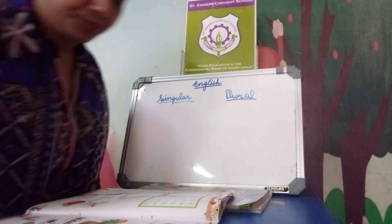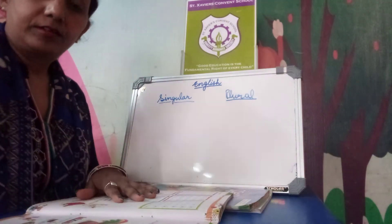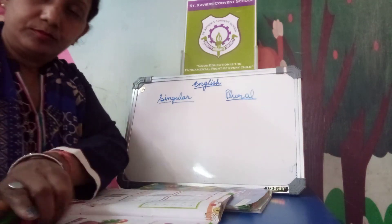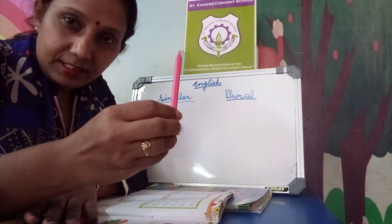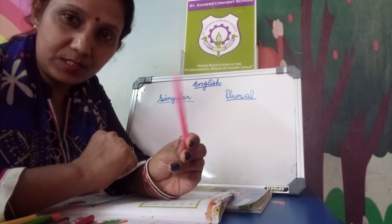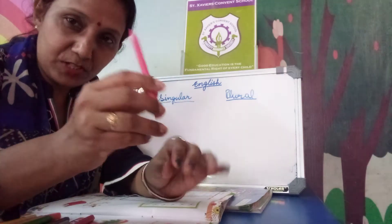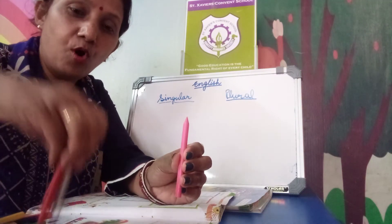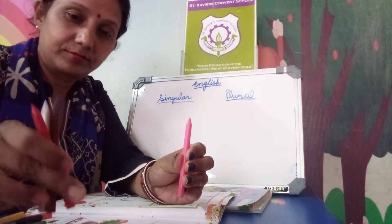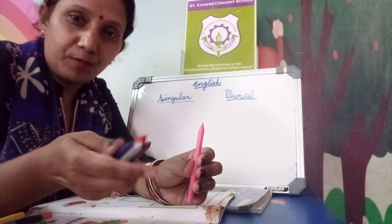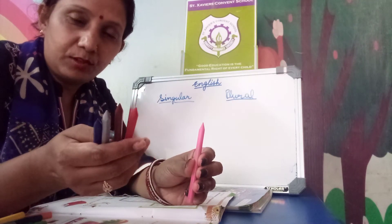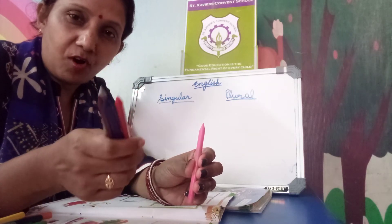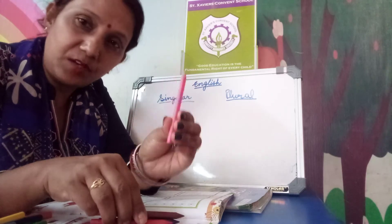You just see here — this is one crayon, one piece of crayon. Now we are having more, we are having more. More means many, like 1, 2, 3, 4 — more. So this more is what? Plural. And this one is what? Singular.